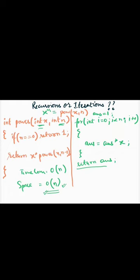In the iteration case, we have a for loop from 0 to n. Each time, x is multiplied. So x will be multiplied n times, giving you x to the power of n.